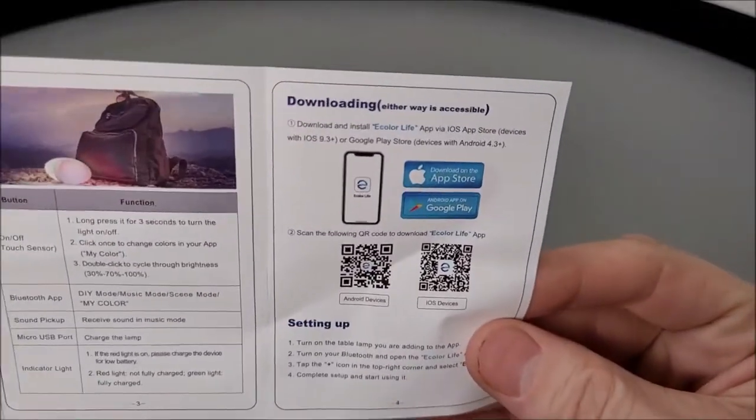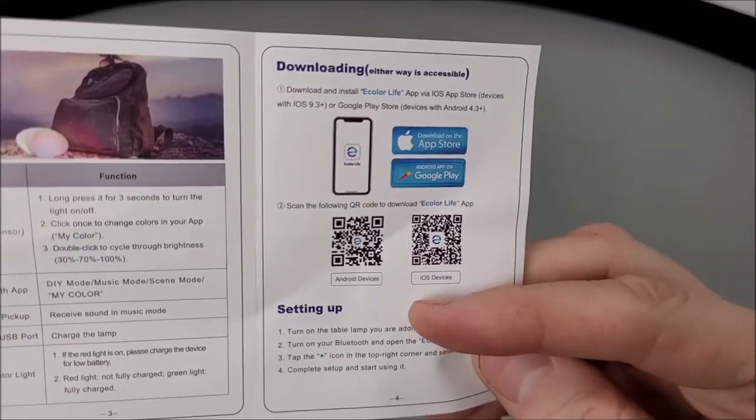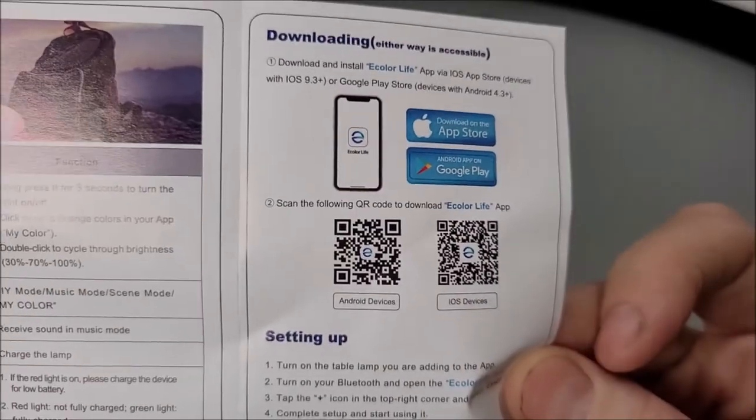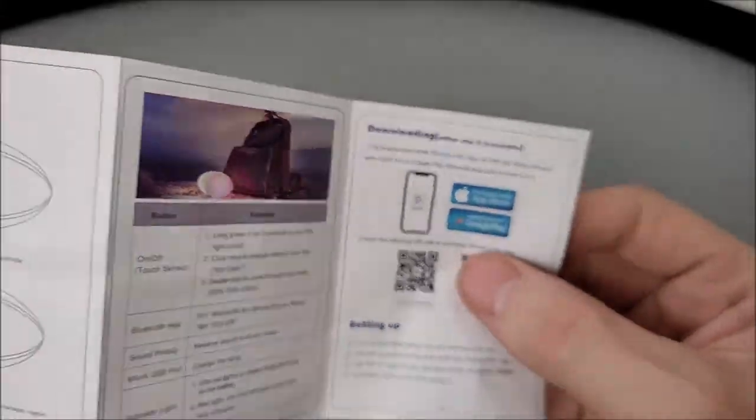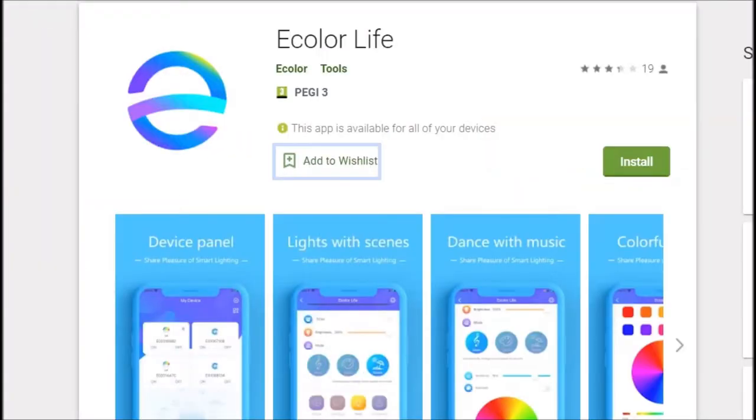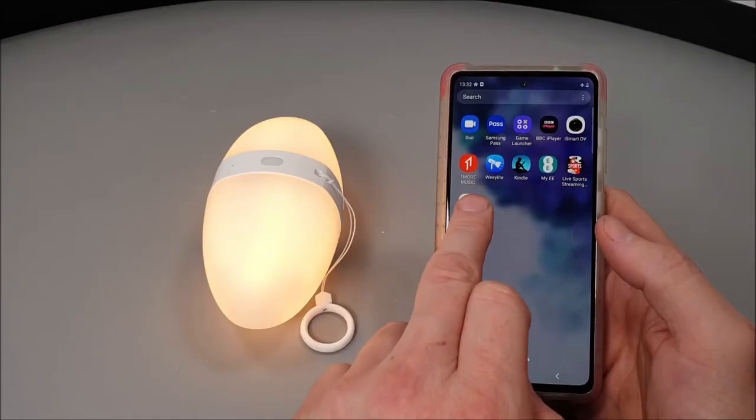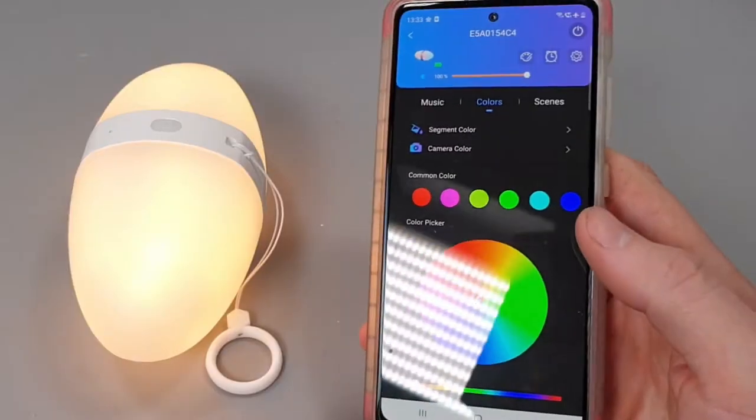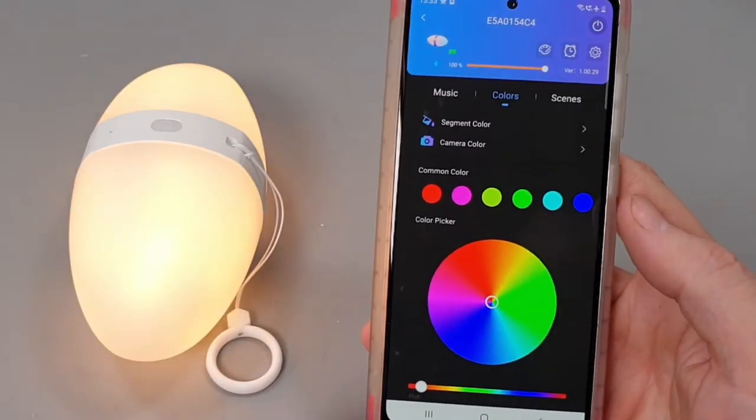Looking back to the user manual, we're supplied with a QR code. If you scan that QR code, it takes you to the Google Play Store where you can download the all-important E-Color Life app to add more customization to the lamp.